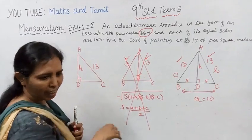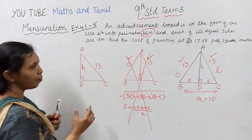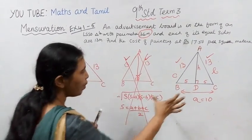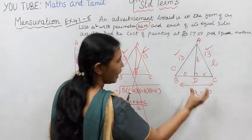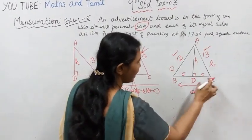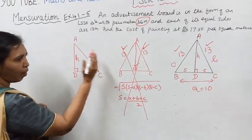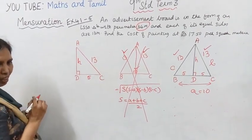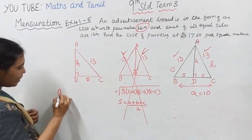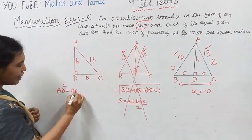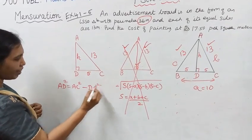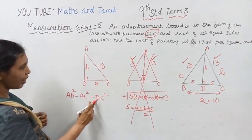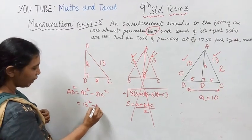But using Heron's formula will take time. Instead, since AD is perpendicular to BC and the base BC is 10, we use triangle ADC. DC is 5 — half of base 10. Using Pythagoras theorem: AD square equals AC square minus DC square.